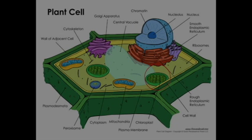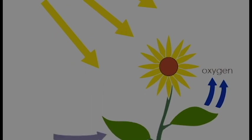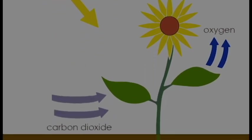Chloroplasts are one of the most notable different organelles in a plant cell. Chloroplasts contain chlorophyll, which are responsible for plants appearing green. They use the sun's energy to convert water and carbon dioxide into usable sugars in a process known as photosynthesis.